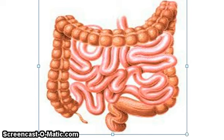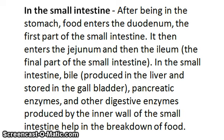In the small intestine. After being in the stomach, food enters the duodenum, the first part of the small intestine. It then enters the jejunum and then the ileum, the final parts of the small intestine. In the small intestine, bile produced in the liver and stored in the gallbladder, pancreatic enzymes, and other digestive enzymes produced by the inner wall of the small intestine help in the breaking down of food.